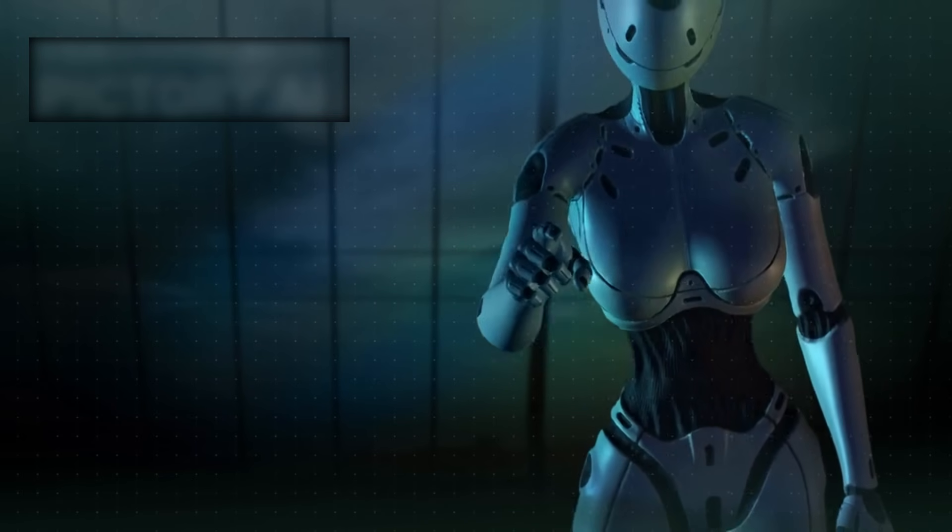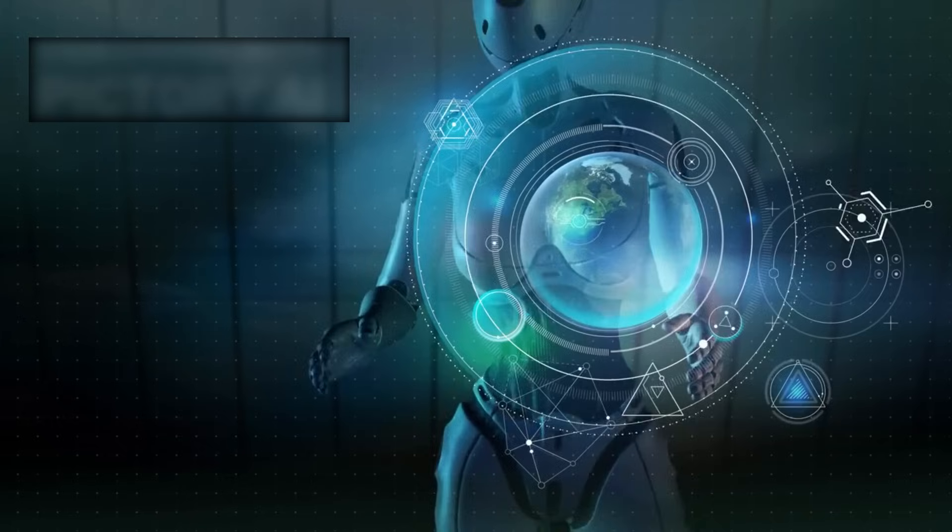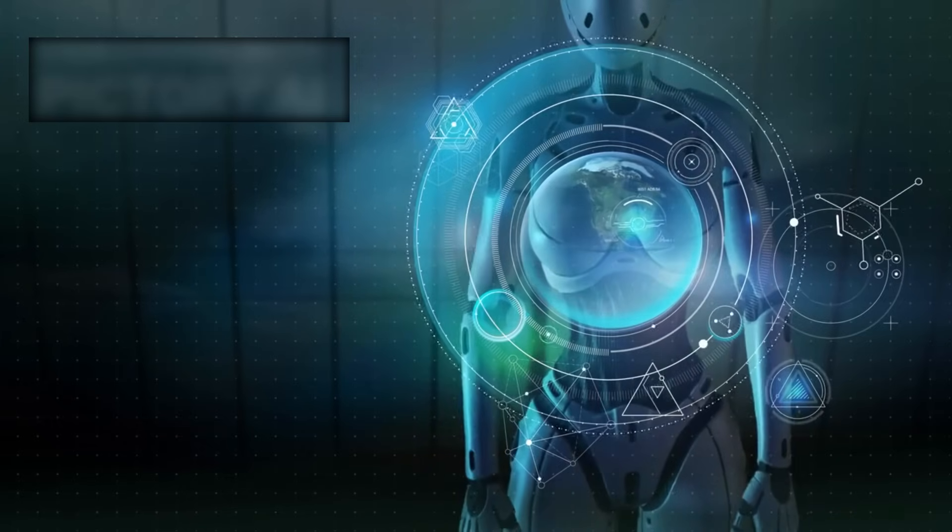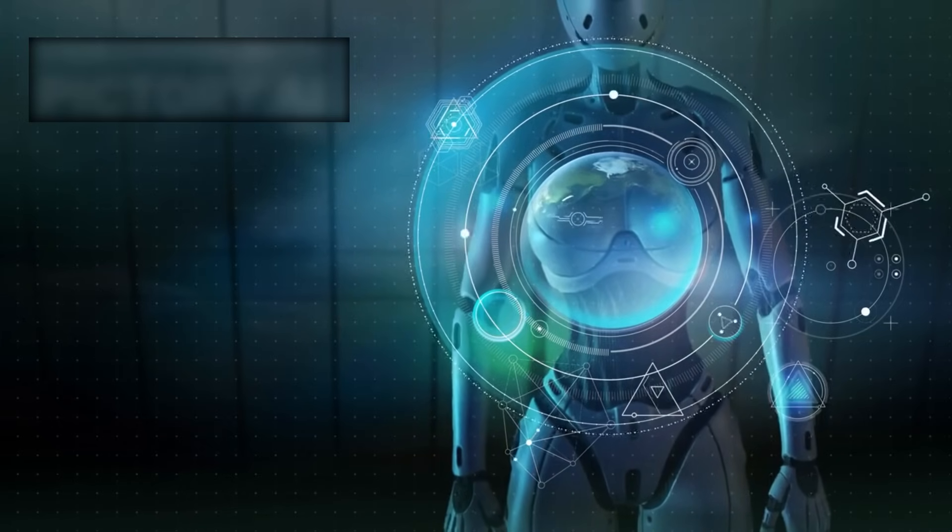But others argue that the confluence of anomalies—CFCs, structured emissions, and atmospheric consistency—points unmistakably to a civilization.